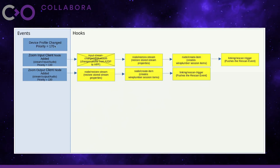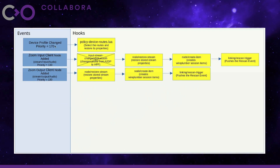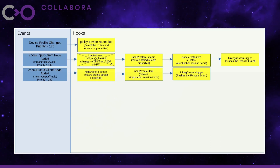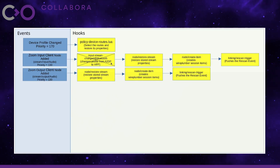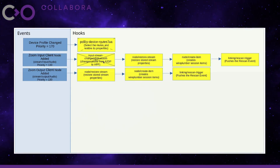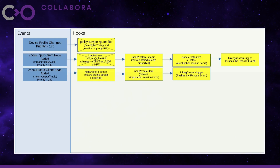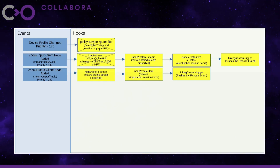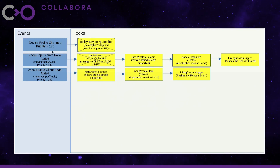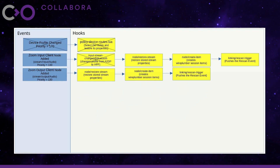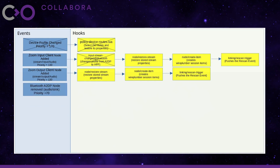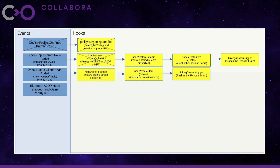This results in a new event: the device profile changed event, which carries higher priority. This is the hook for that event. At the end of each and every hook, event dispatcher checks if there are any higher priority events. There is one, so it continues execution of that higher priority event and discontinues the current one. It takes up this event, executes the corresponding hook, and since this is the only hook for this event, it is done.